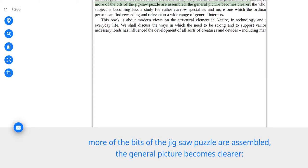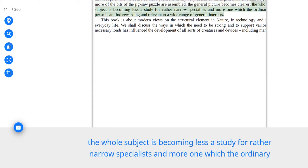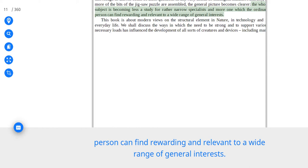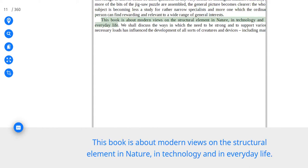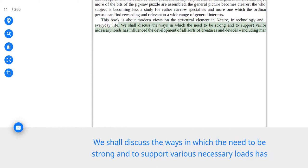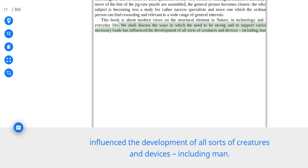Can engineers learn from natural structures? What can doctors and biologists and artists and archaeologists learn from engineers? More of the bits of the jigsaw puzzle are assembled, the general picture becomes clearer. The whole subject is becoming less a study for rather narrow specialists and more one which the ordinary person can find rewarding and relevant to a wide range of general interests. This book is about modern views on the structural element in nature, in technology, and in everyday life.